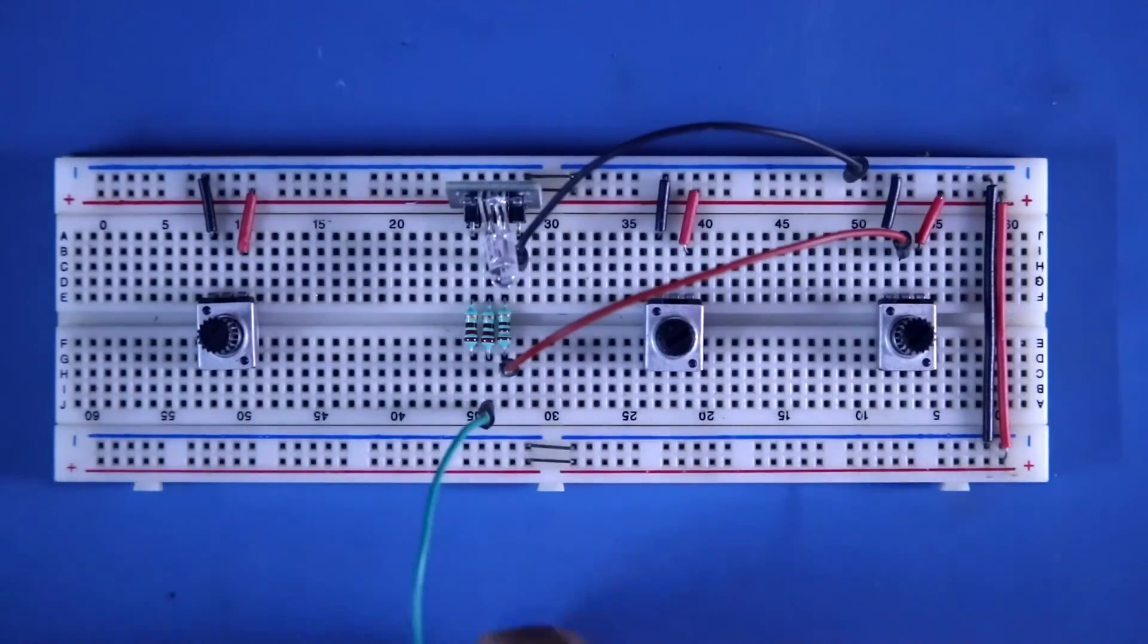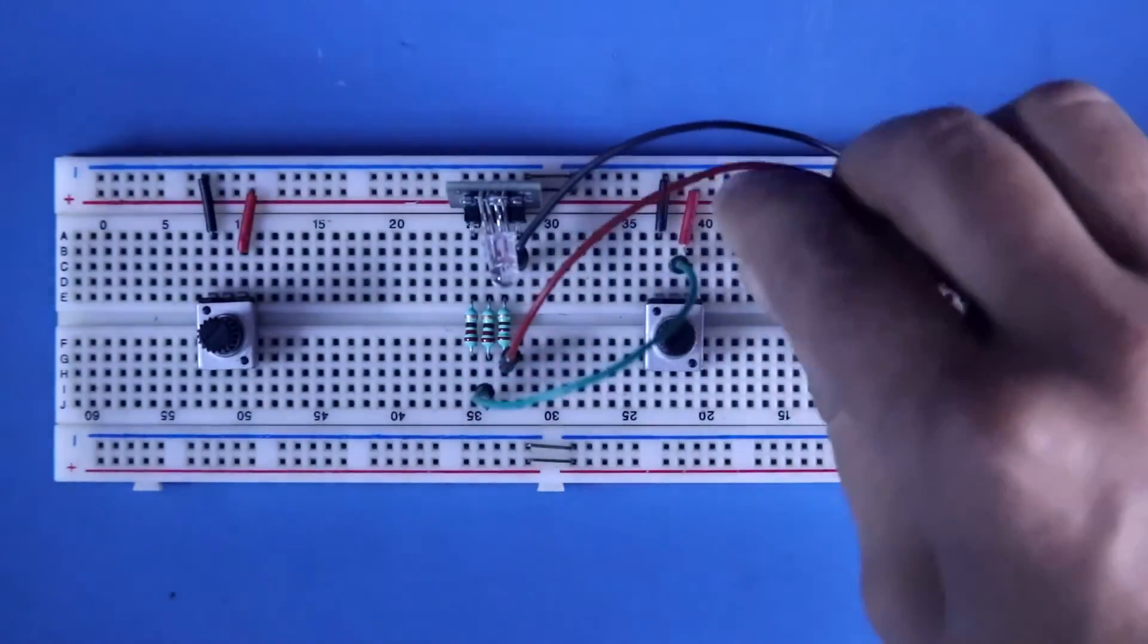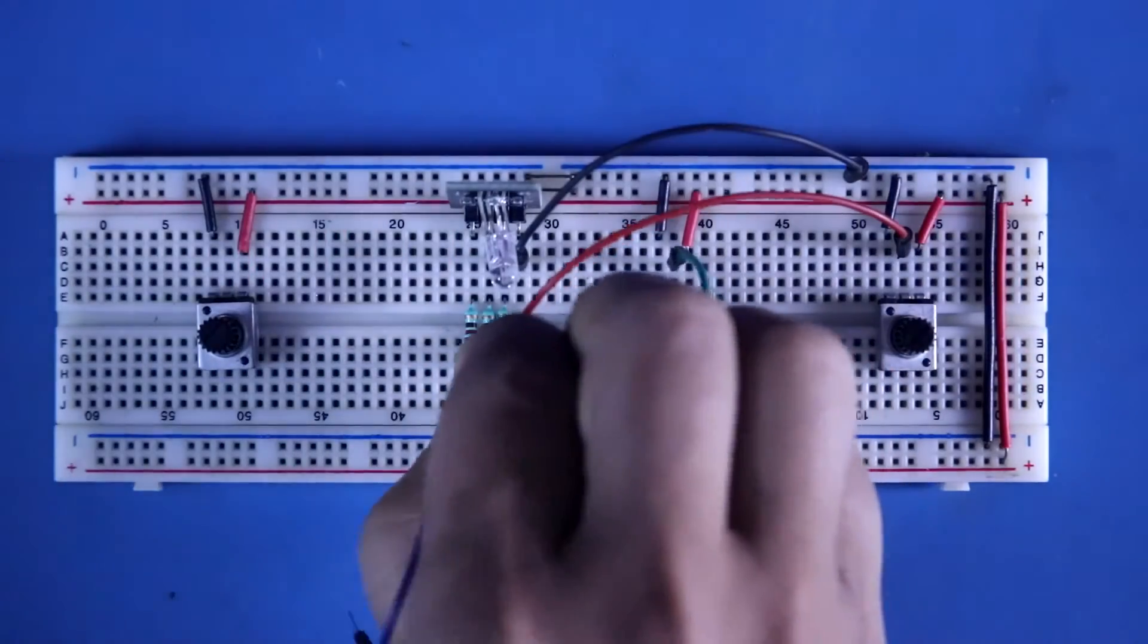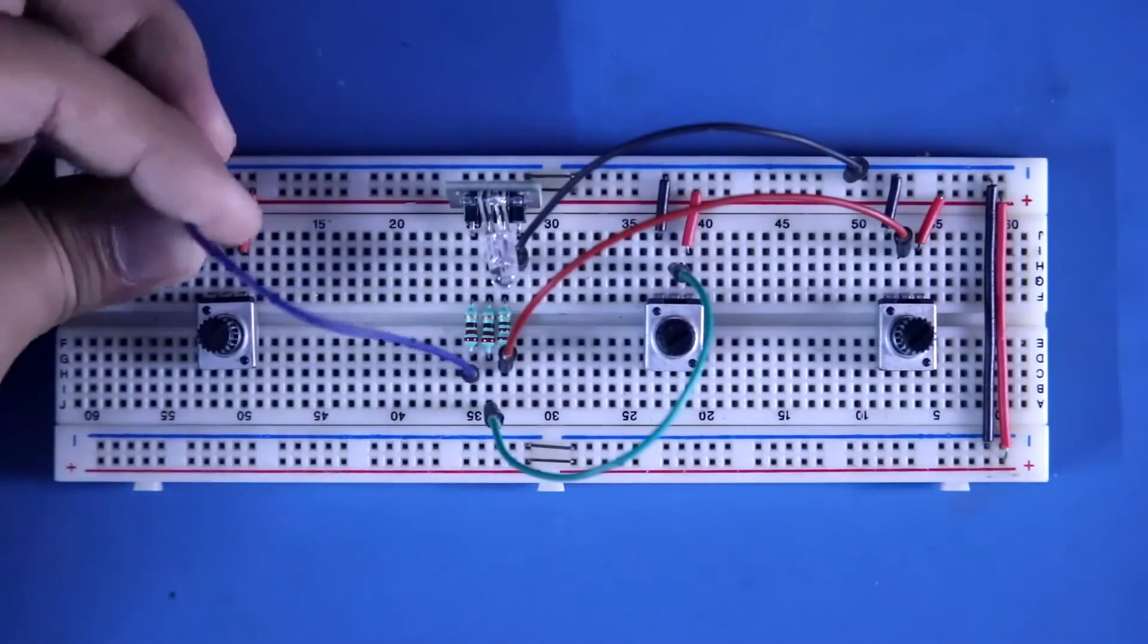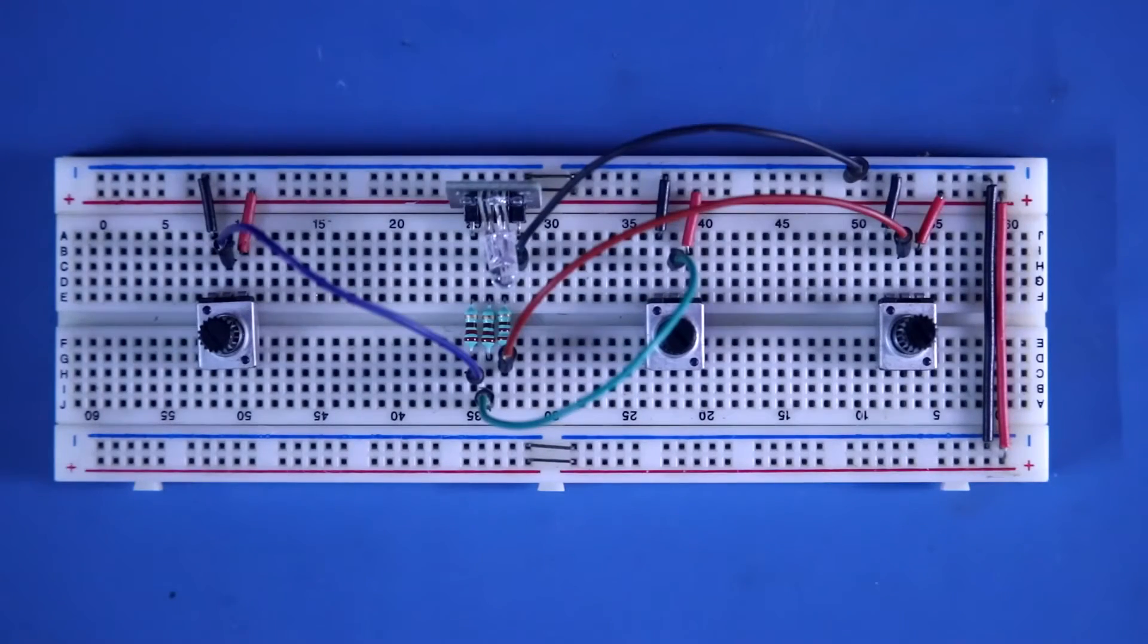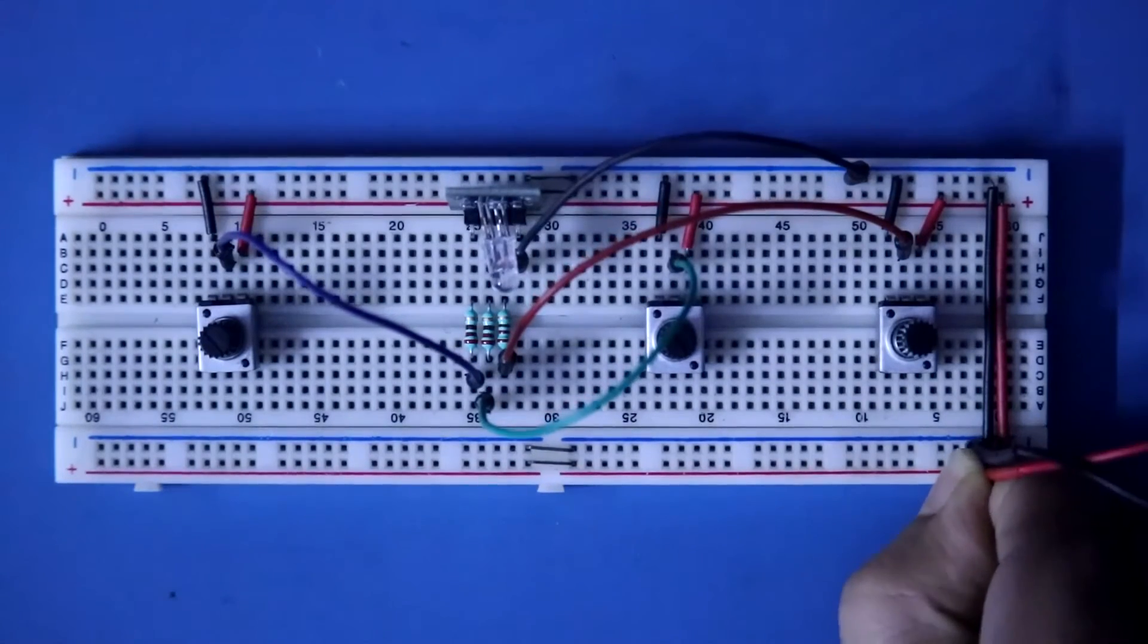This is G. And I am connecting this to the middle pin of 2nd potentiometer. And B to the middle pin of 1st potentiometer. Turning off my lights. Connecting 5 volt power supply.